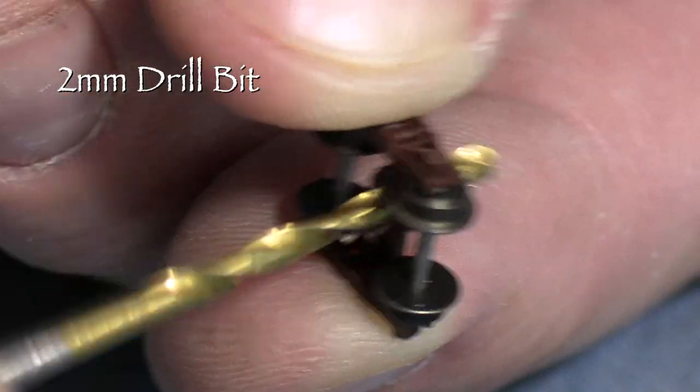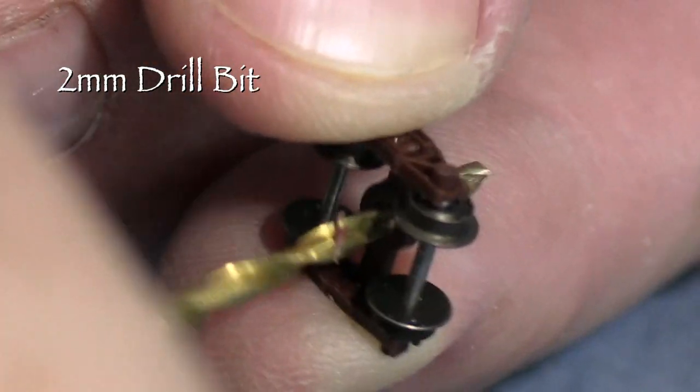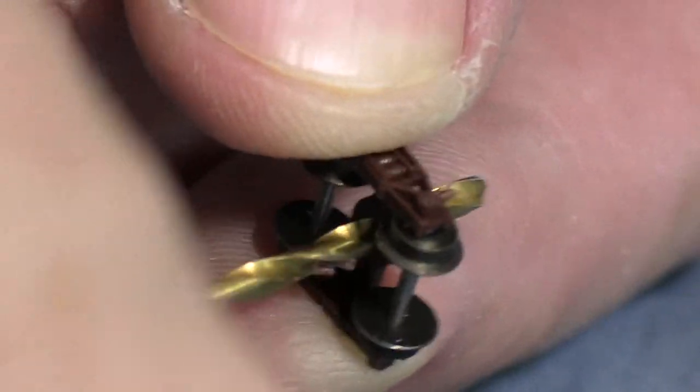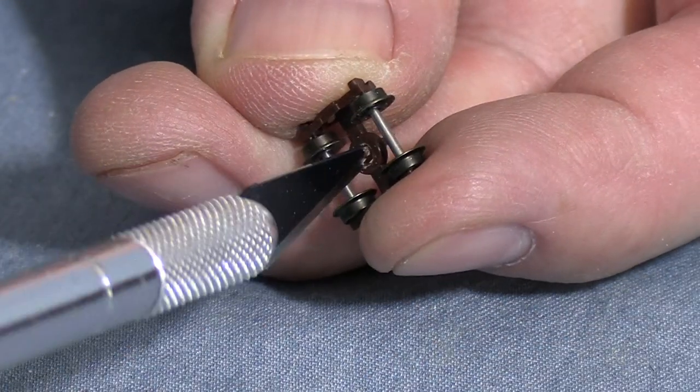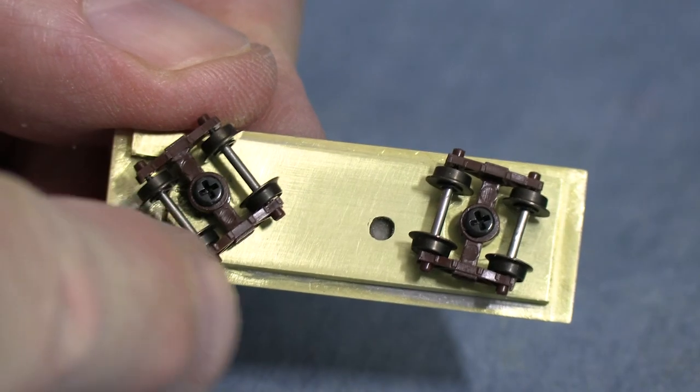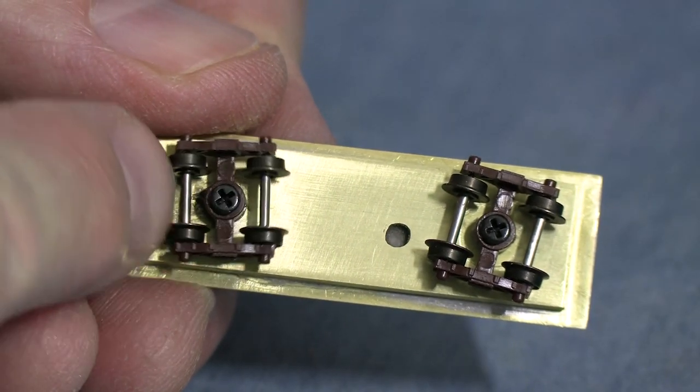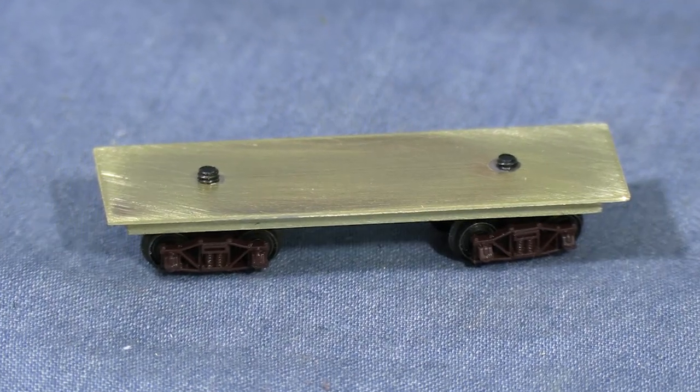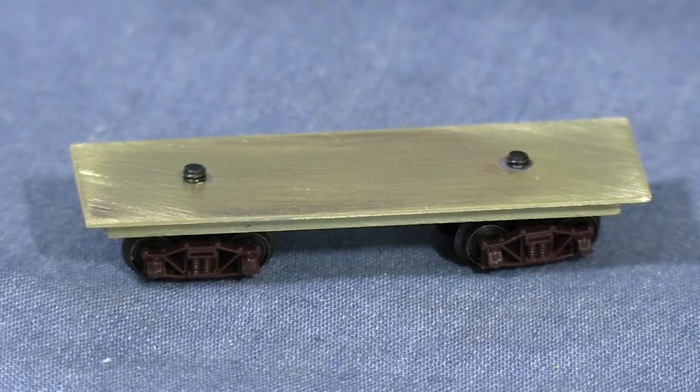The holes in the trucks are a little small for a 2mm screw, so I'll ream them out using a 2mm drill bit. That's still slightly small, so I'll finish up by spinning an X-Acto blade in the hole. Now I can mount the trucks to the frame. It's important that they pivot freely. With the wheels on, this is starting to look more like a piece of railroad equipment and less like a bunch of parts.